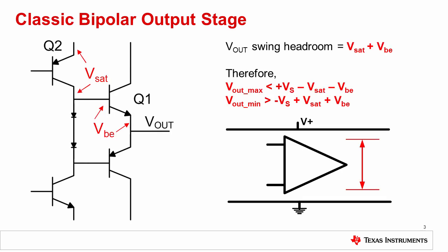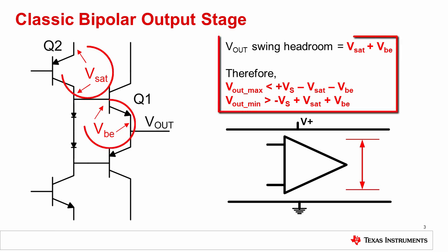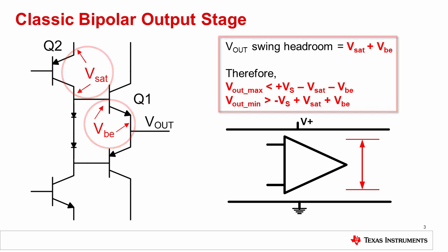Let's discuss the classic bipolar output stage. While it is common among many older devices, this output stage is still used in modern designs. The advantage of this emitter follower output stage is that the AOL, or open loop gain, is not significantly affected by loading. Furthermore, this classic output stage has a resistive output impedance. The main disadvantage is that the output swing is limited by the VBE and saturation voltages of the output transistors, and this output limit can be a volt or more depending on how the circuit is implemented.